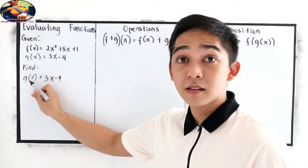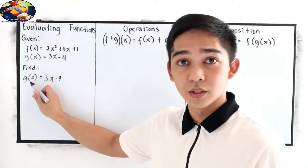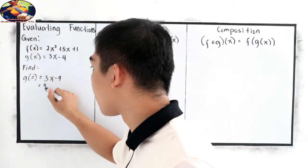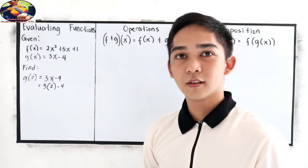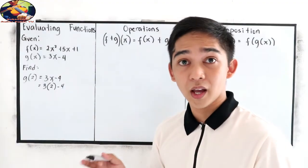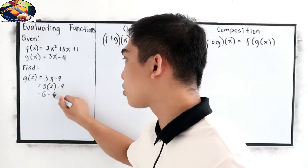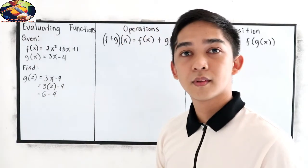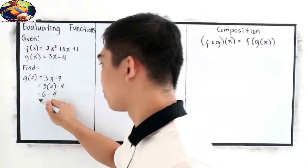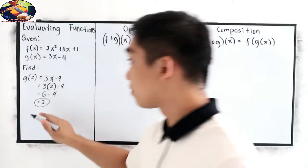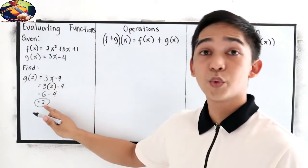g(2) means our value for x is 2. So let us substitute: 3 times 2 minus 4. Simplify: 3 times 2 gives us 6, minus 4. And 6 minus 4 is 2. That will be the value of g(2), which is 2.